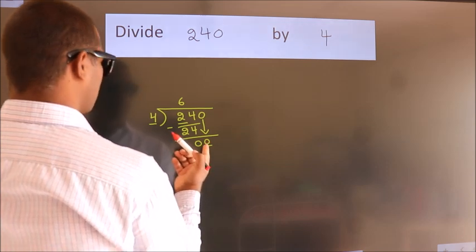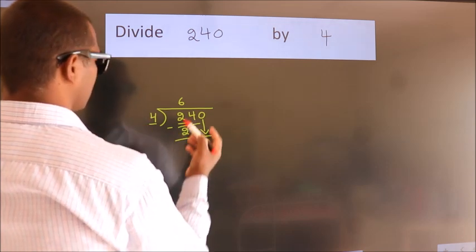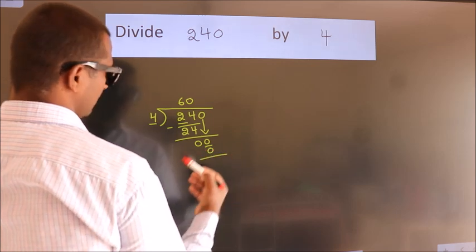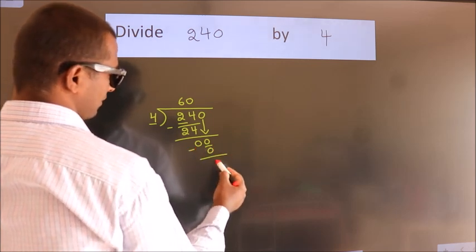When do we get 0? In 4 table. 4 times 0, 0. Now we subtract. We get 0.